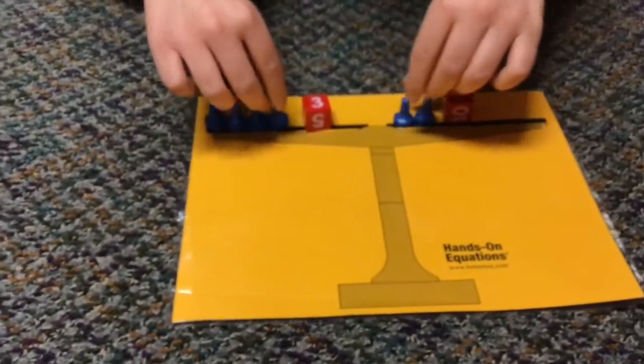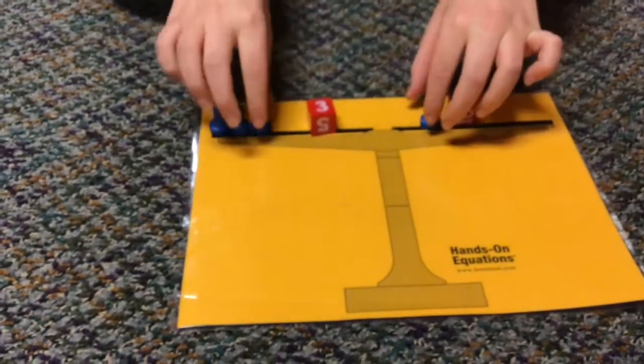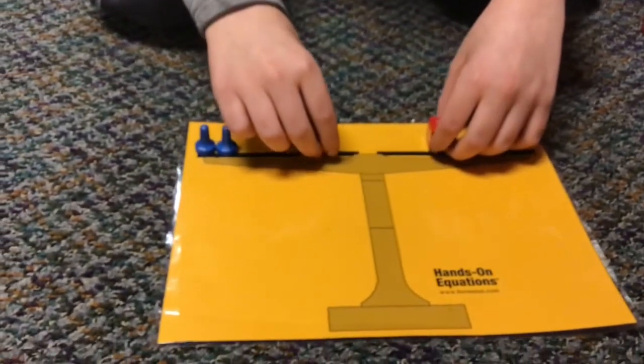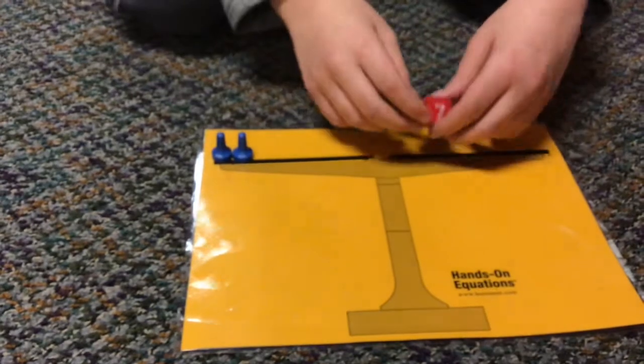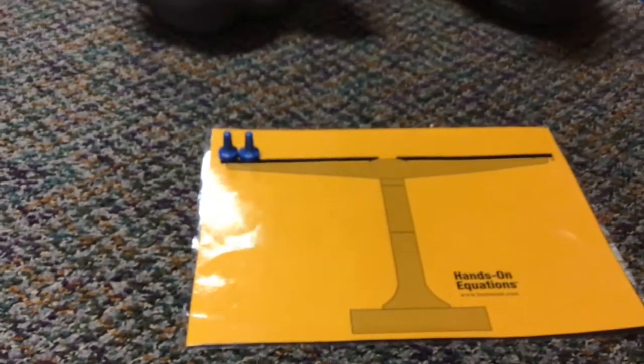We can remove X from both sides. As long as we do the same thing, it is allowed. Then we can remove 3 from both sides. Get that out of the way. This equals 4.